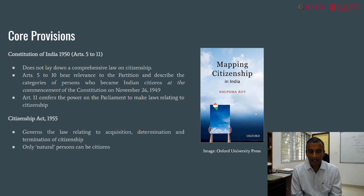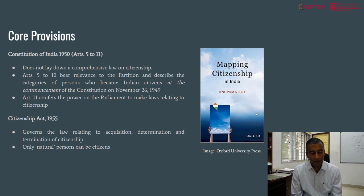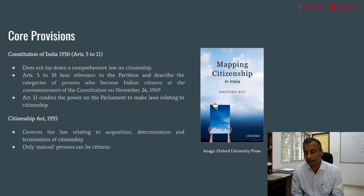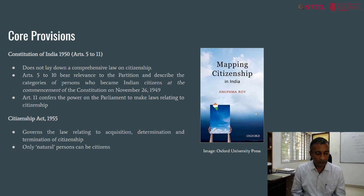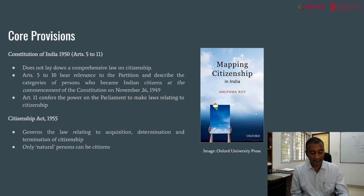Article 5, for example, makes it clear that at the time of the commencement of the Constitution of India — that is 1950 — all those who had domicile in the territory of India, who were either born in the territory of India, born to parents who were born in the territory of India, or who had been ordinarily resident for not less than five years, would be treated as citizens of India. But this only settled the question of who were citizens in 1950 — and notice that all three criteria are used: born in India, descent from parents born in India, and ordinary residence akin to domicile.